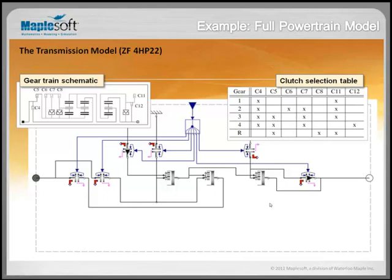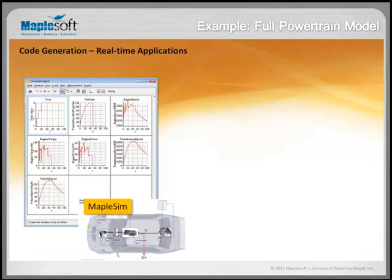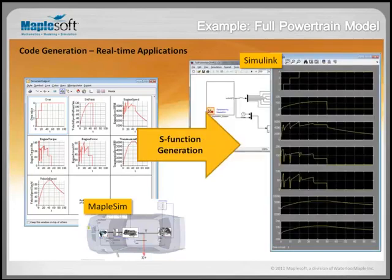On top of this type of simulation, you can do code generation — export the code and use it in real-time applications. In one example, C code was placed inside a Simulink MDL file and simulated there, creating an S-function. The C code can be generated from your model within MapleSim as standalone C code or C code with a fixed-step solver, and export to D-Space and LabVIEW platforms are also available.